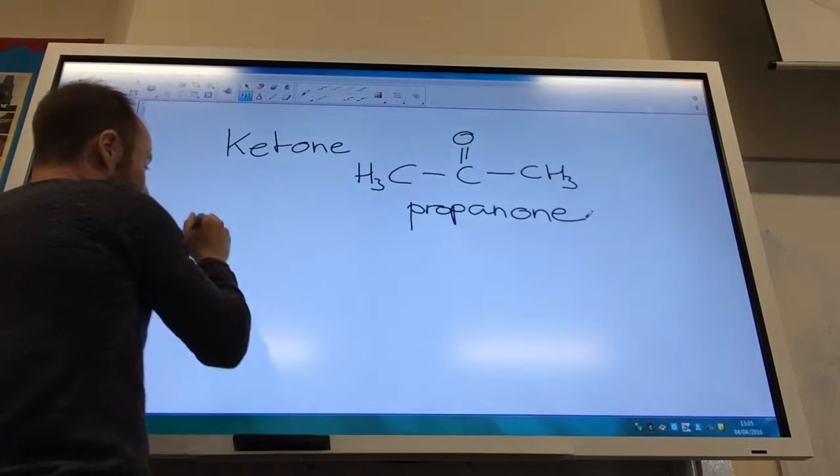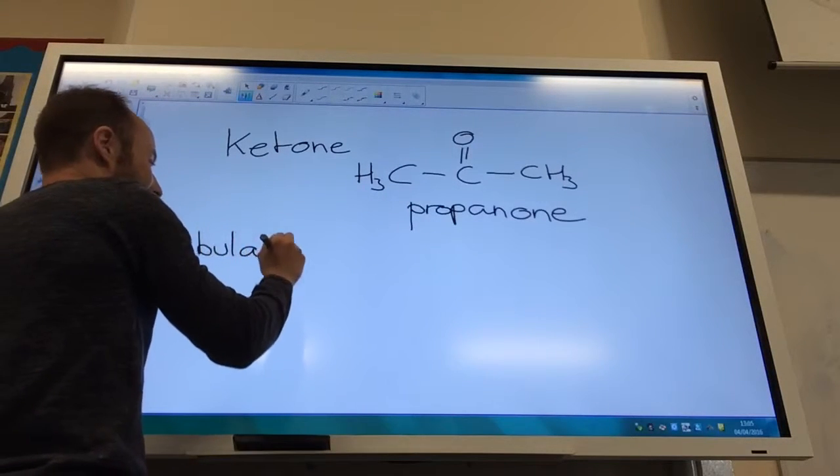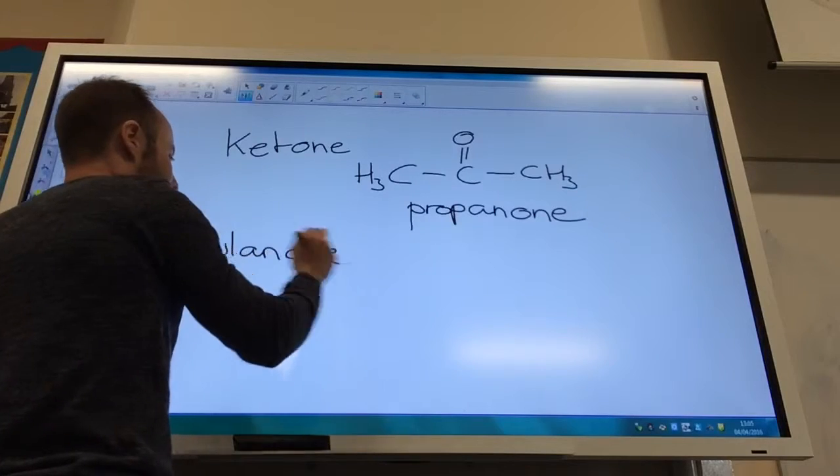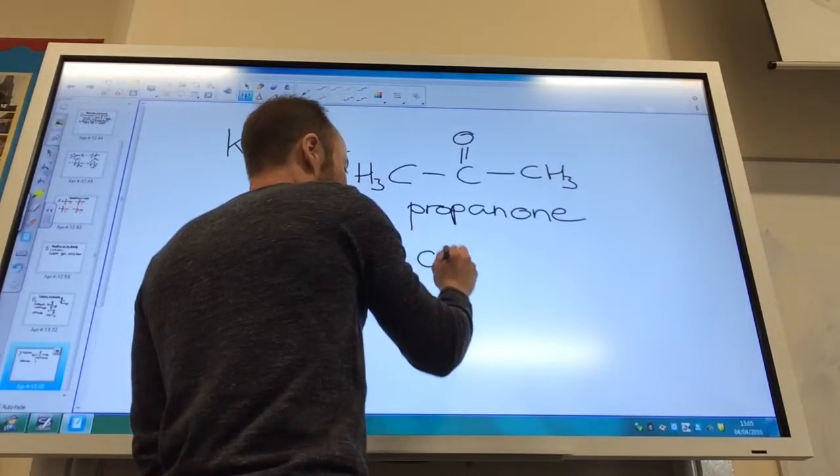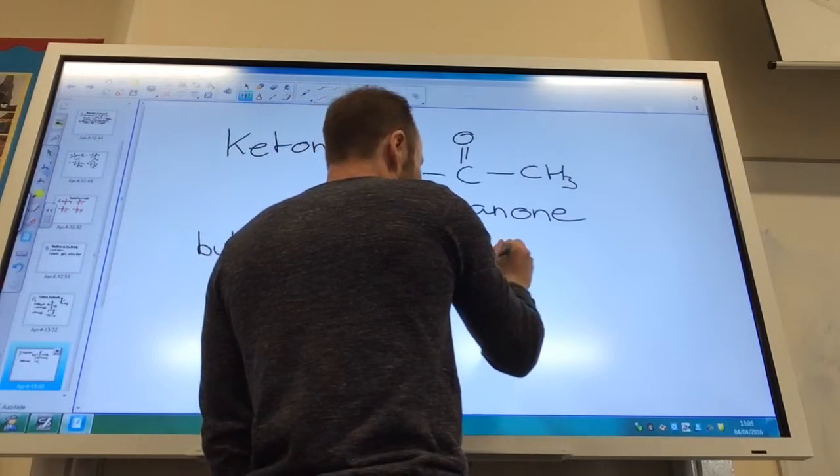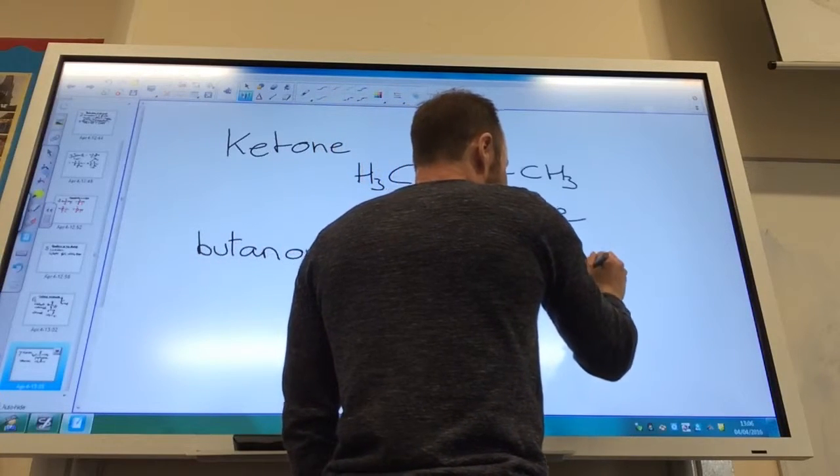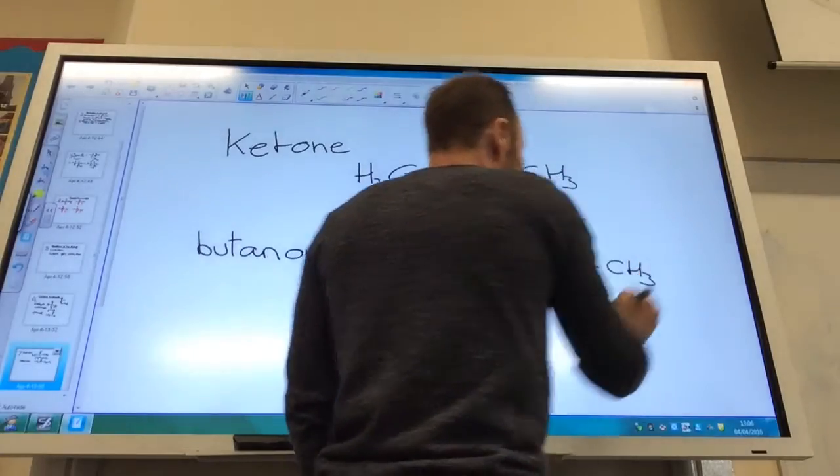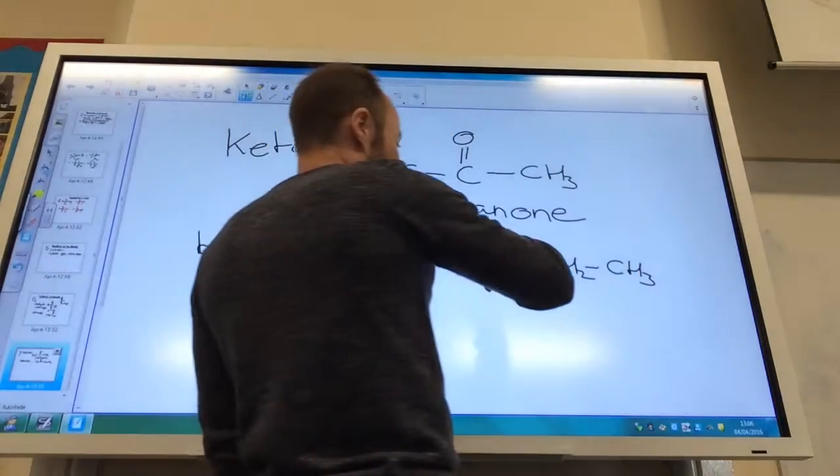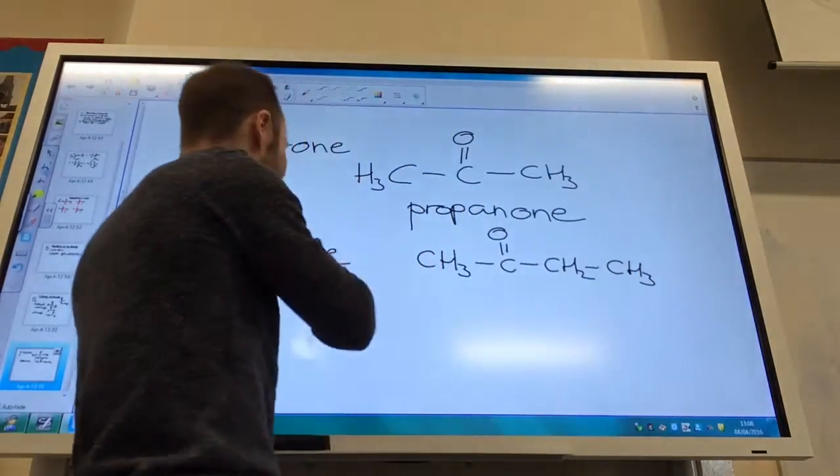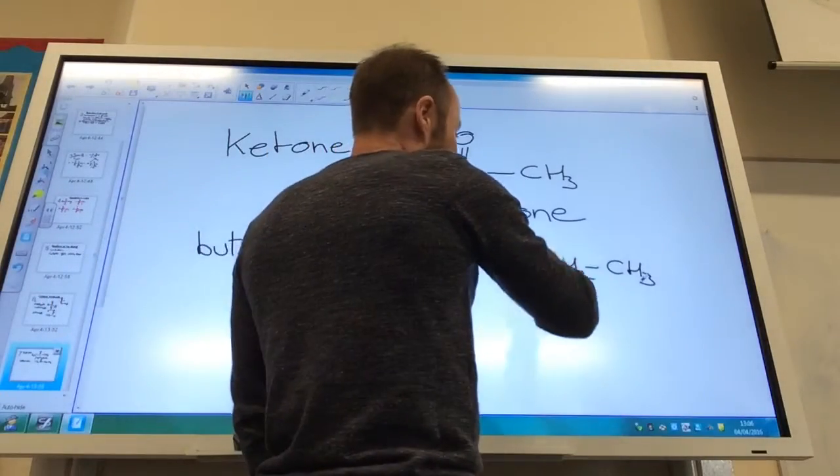The next one is going to be butanone. That's going to have four carbon atoms. Again, do I need a number? No, I don't, because it's on the second carbon. If it was on the end it would be butanal, and it doesn't matter which end.